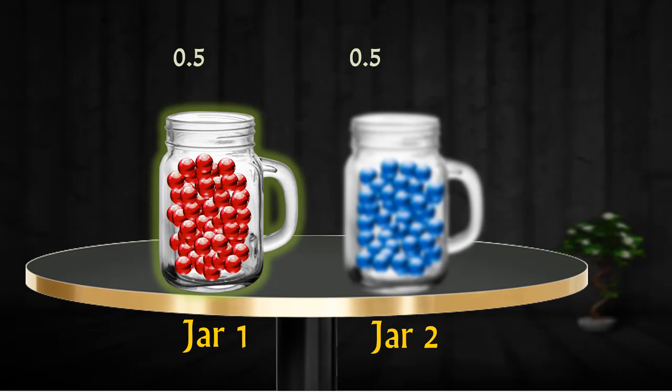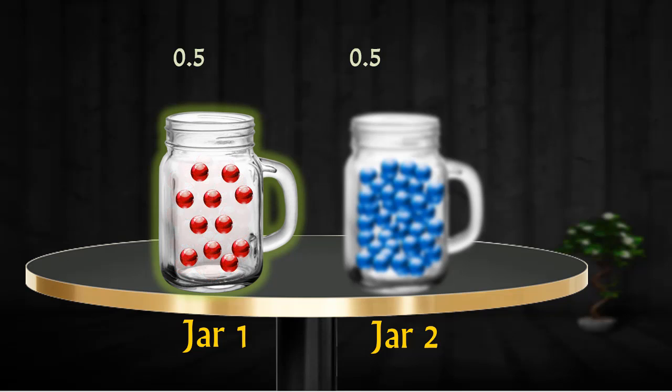All the marbles in this jar are the same color, that is red. So, instead of having all 50 red marbles in this jar, even if there are just a few red marbles, the chances of drawing a red marble from this jar would still be 100% as there is no other marble of a different color.